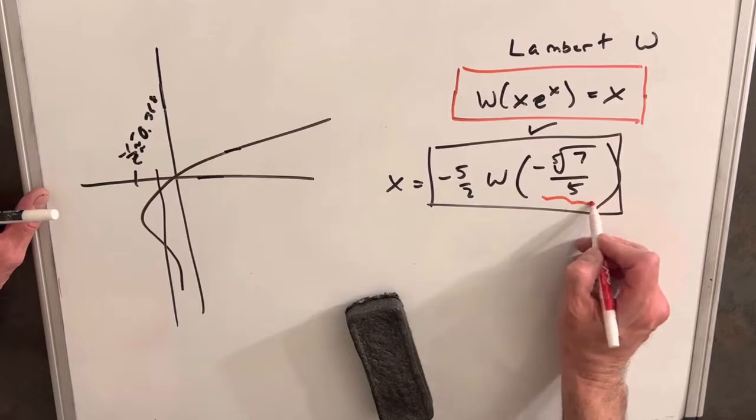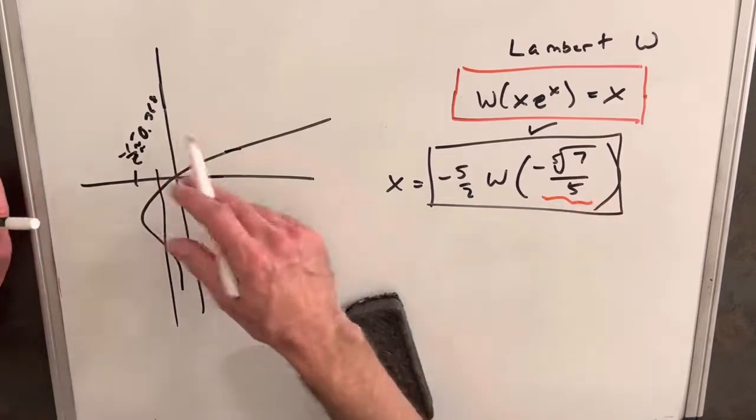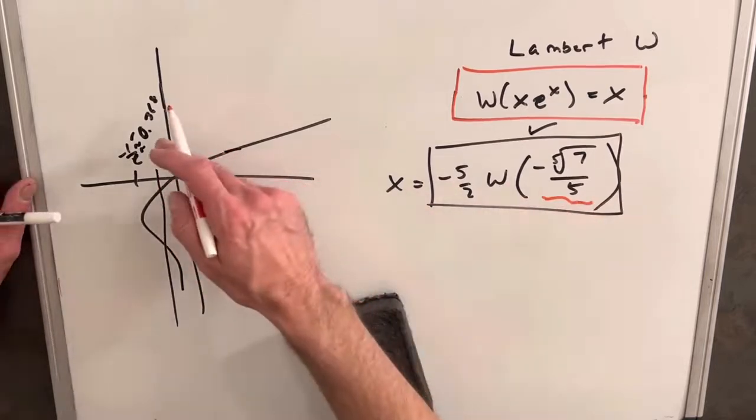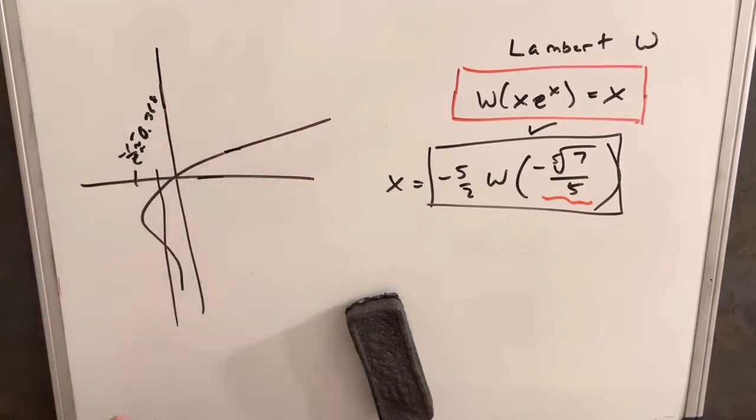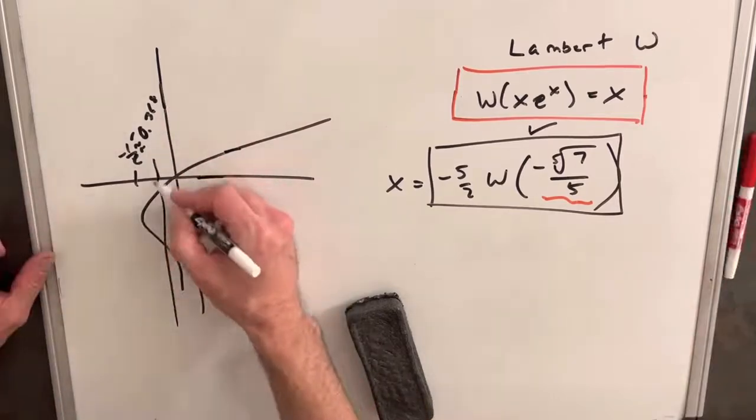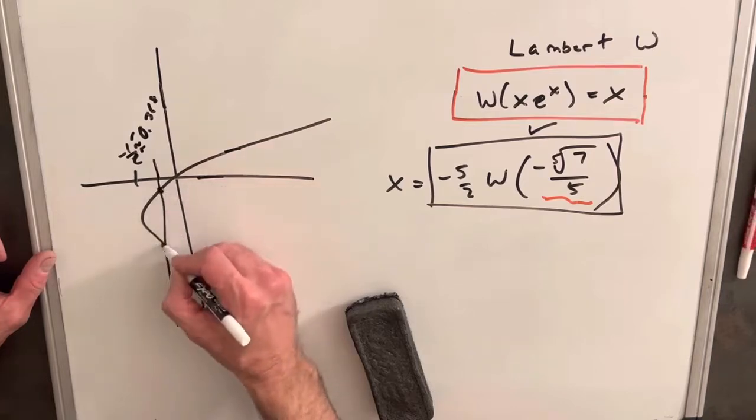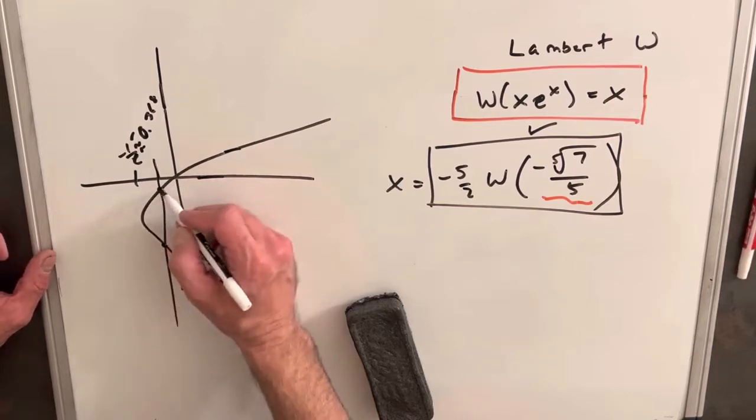So this value here being negative and being a small value, it's going to be greater than minus 0.368. So it's going to be somewhere in this region here. And you'll see we have two intersection points, which is going to give us two real solutions.